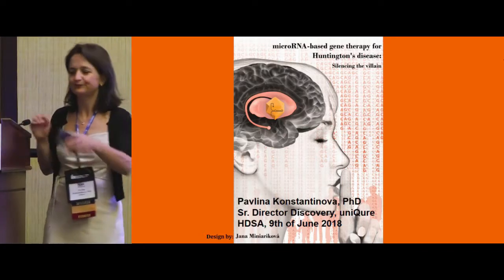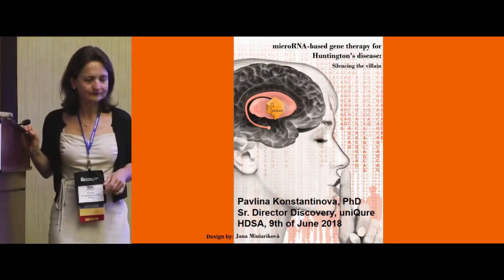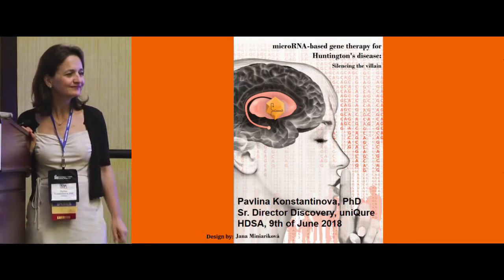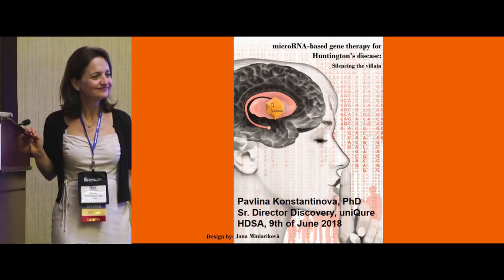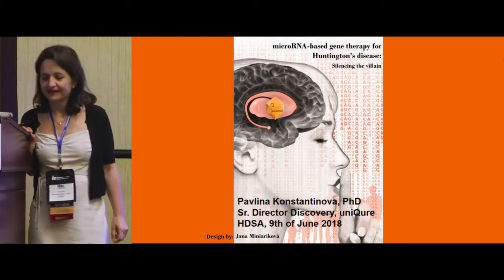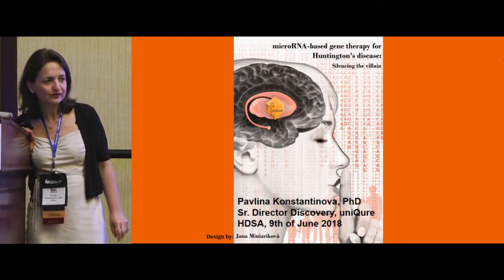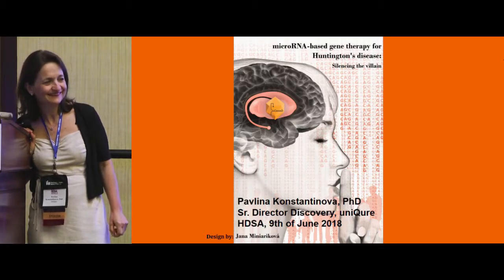Question: Does AMT-130 knock down only the mutant Huntington protein, or both mutant and wild-type? Answer: In our approach we are knocking down both mutant and wild-type Huntington. Research is ongoing to prove whether doing that is beneficial, and this is an important area of investigation.